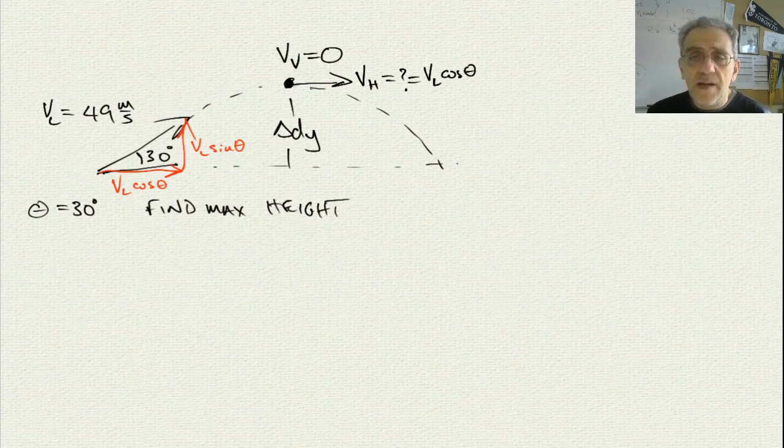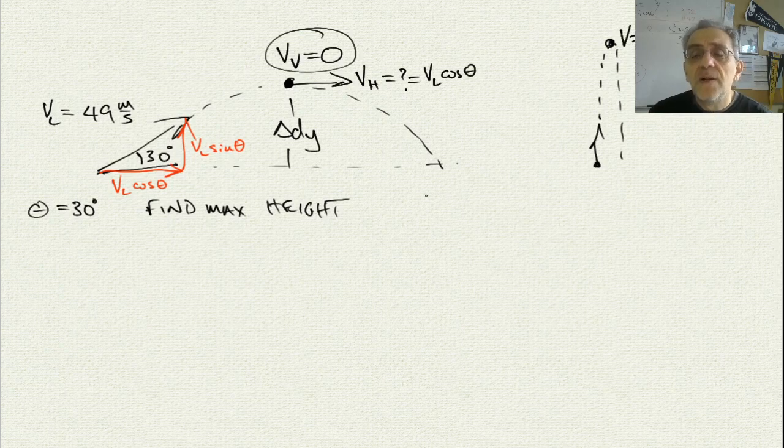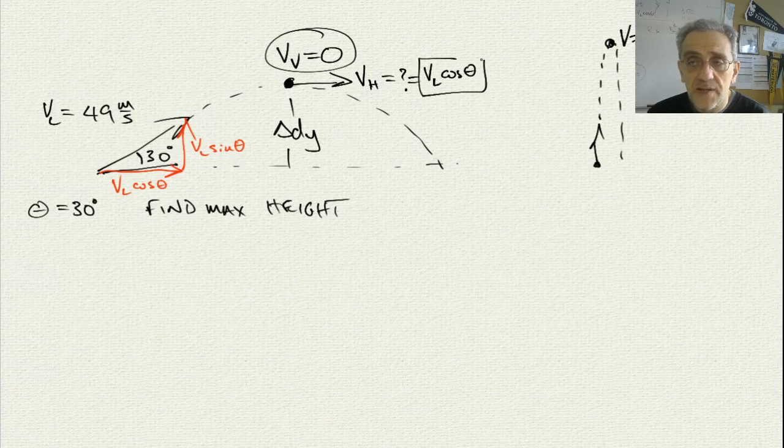Now, that might take some thinking, but if you think about a projectile that is thrown straight up into the air, it goes up and it comes back down. At this point, at the top, the vertical velocity is zero. So it's the same here. The vertical velocity is always changing. The horizontal velocity is always constant.